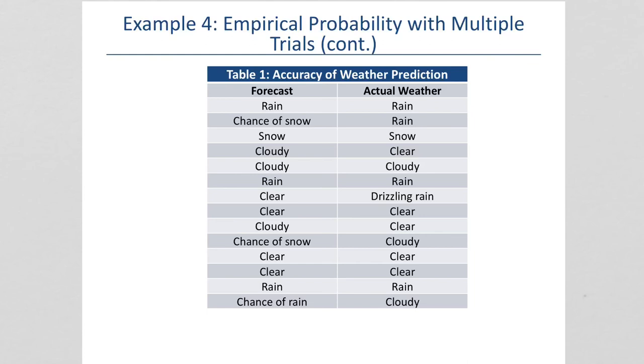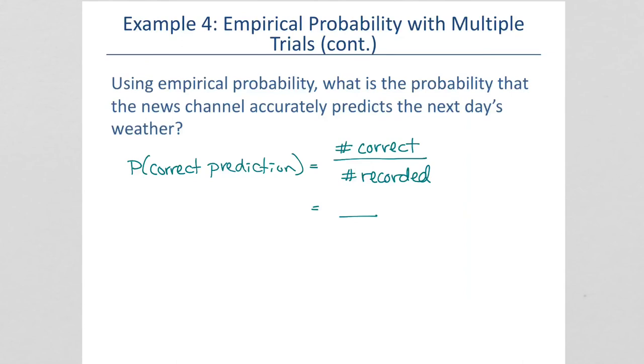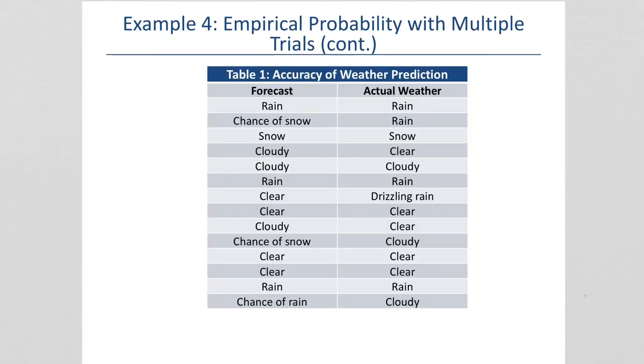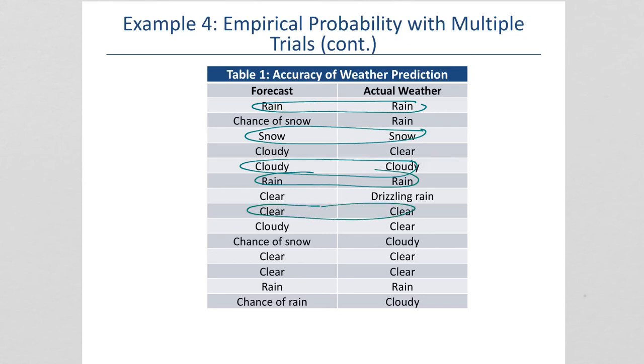1, 2, 3, 4, 5, 6, 7, 8, 9, 10, 11, 12, 13, 14 days. And we want to see how many of those were correct. So, this one was correct. There's 1, 2, 3, 4, 5, 6, 7, 8. 8 correct.